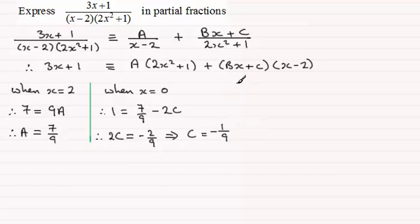Now to get the last constant, B, then what I could do is substitute a value of x other than 2 or 0 into here and solve for B. But I always generally find the easiest option is just to compare the coefficients of x squared. But I'll leave it up to you to decide what you want to do.